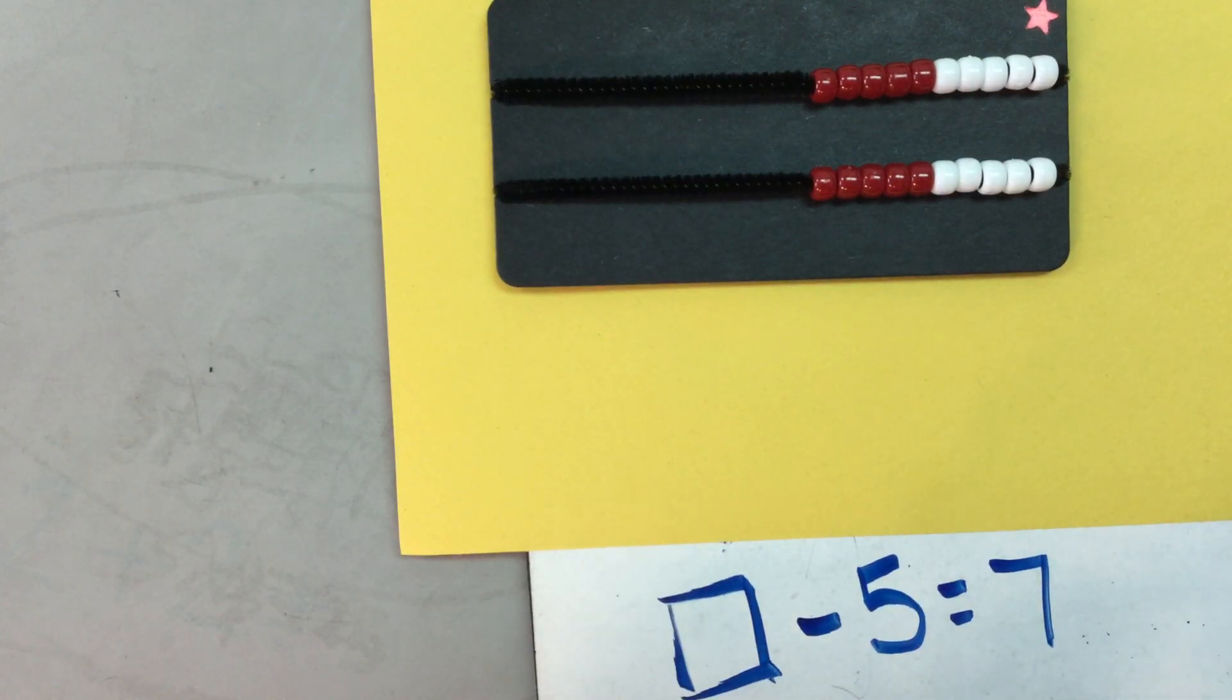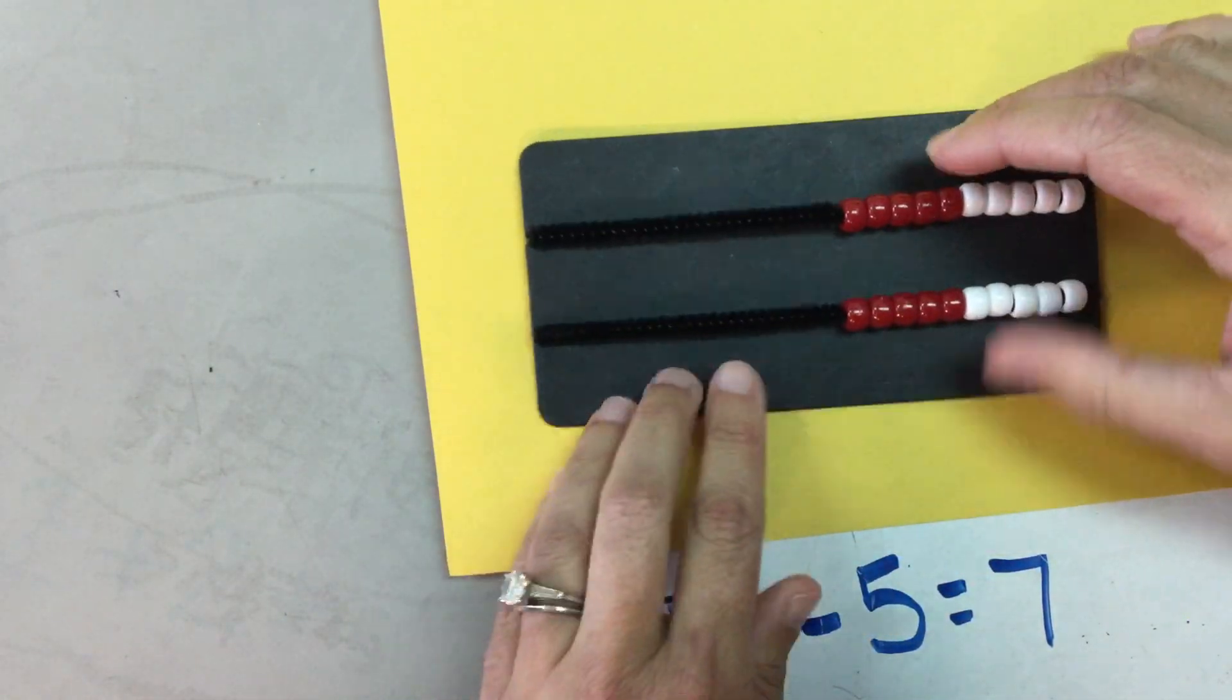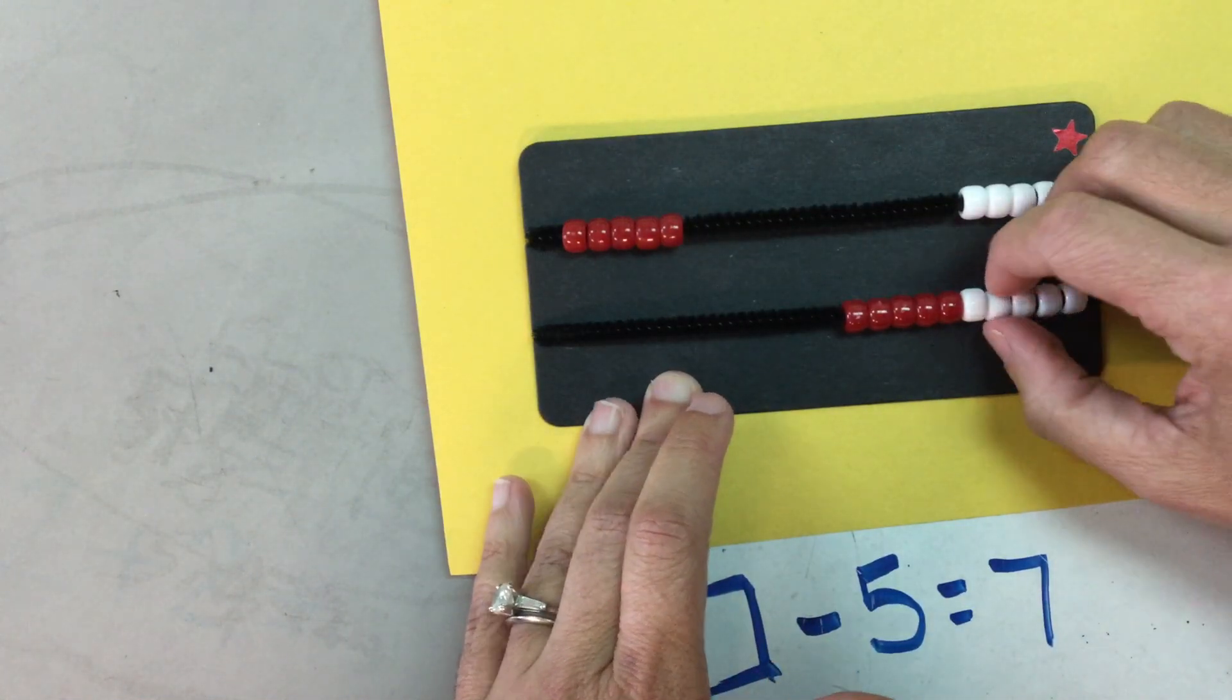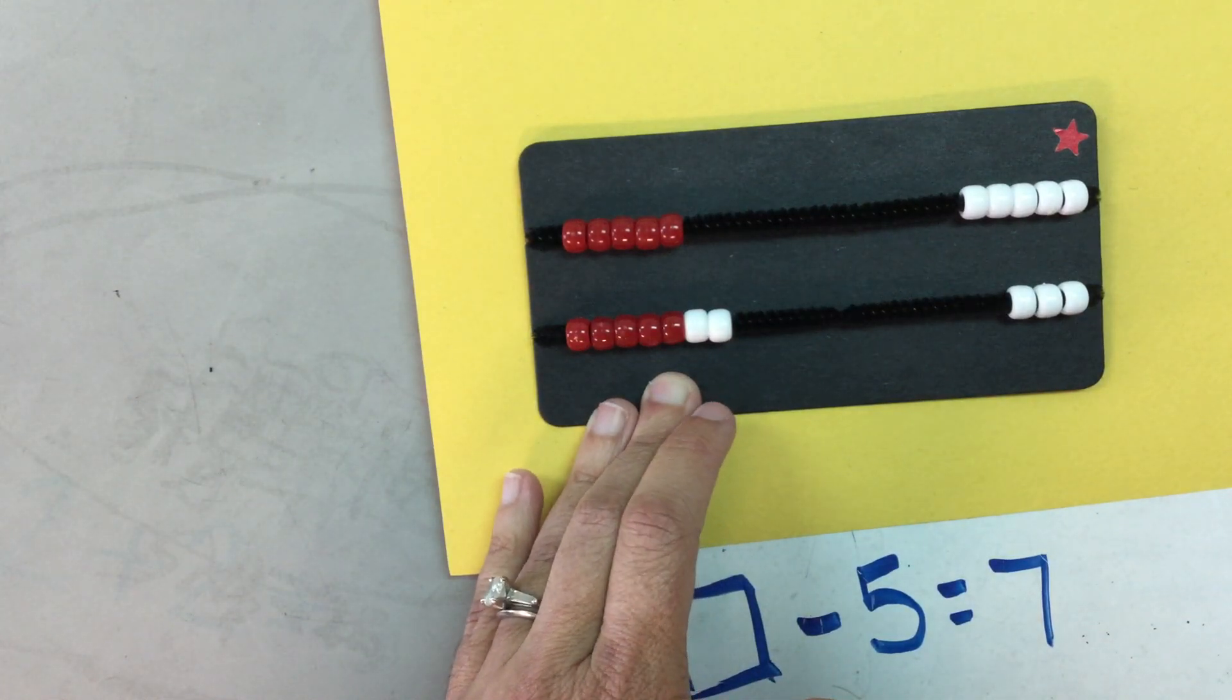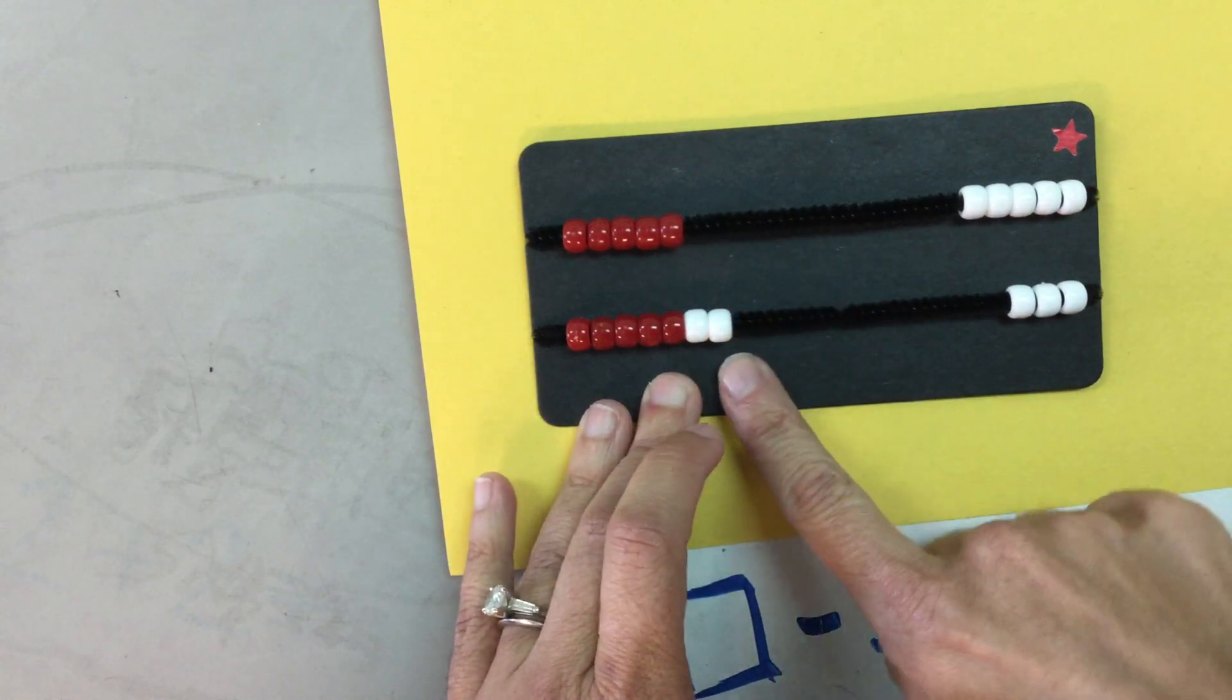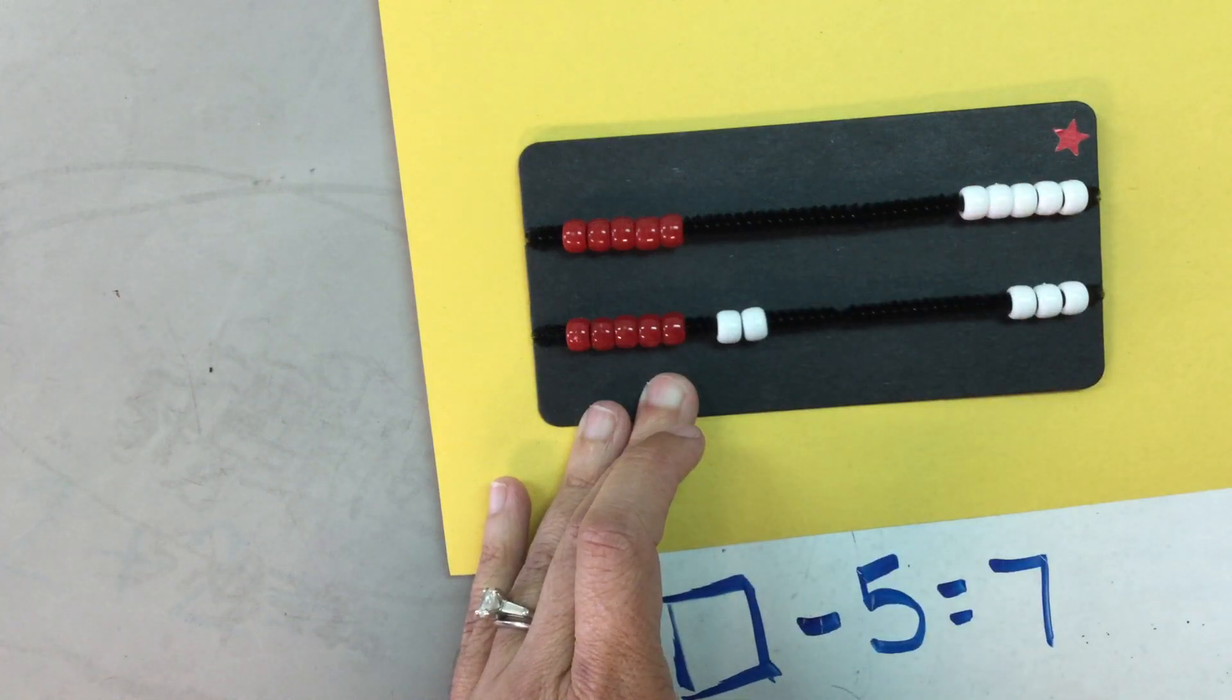So I can use my number rack to model this problem. Here's the five beads. I can show my five apples that I gave to my friends and I can use seven beads to represent my seven apples that I have left, and then I can see that my total I started with are 12. Here's five and five and two more to make 12.